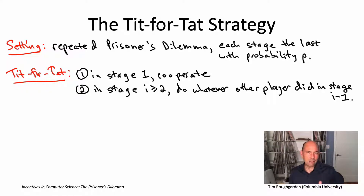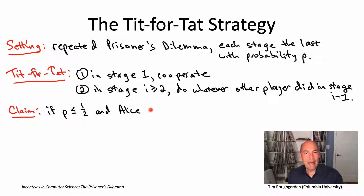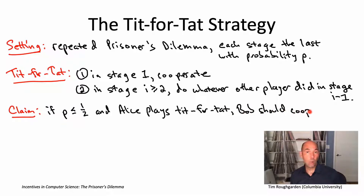Now let's ask a different question. Suppose Alice is doing tit-for-tat and maybe even commits to it, so Bob knows that. What should Bob do in response? Should Bob cooperate? Should Bob play tit-for-tat? The claim is that as long as P is at most one-half — as long as the probability of continuing to another stage is at least 50% — Bob should cooperate. Let's see why that's true.